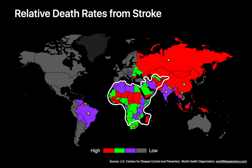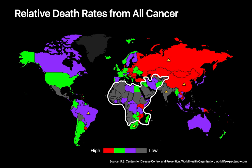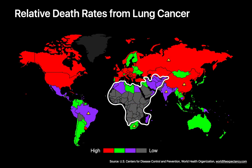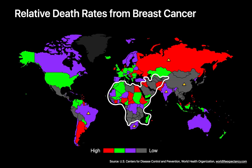Relative death rates from stroke in low-income countries are substantially higher than in most high-income countries. Middle-income BRICS countries like China and Russia also experience dramatically higher relative death rates from stroke than most other high- and middle-income countries. Relative death rates from all cancers combined in low-income countries are generally lower than in most high- and middle-income countries, with some of the highest rates currently in China, Russia, and Eastern Europe. However, a more heterogeneous picture emerges with specific cancers: the lowest relative death rates from lung cancer are in low-income countries in Africa and Central Asia, while the highest occur in the U.S., Europe, Russia, and China. With breast cancer, relative death rates appear relatively heterogeneous, with the exception of Russia, which sees some of the highest rates in the world.